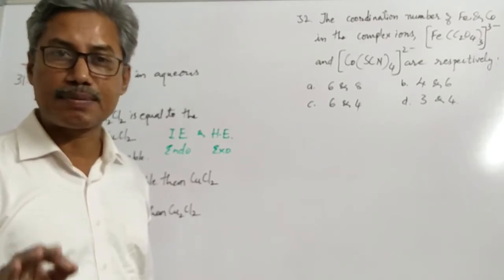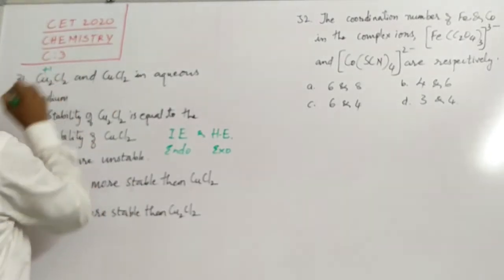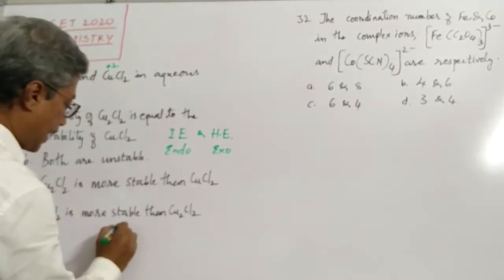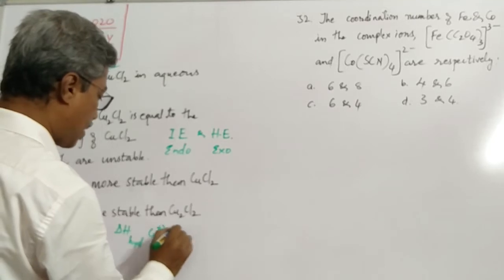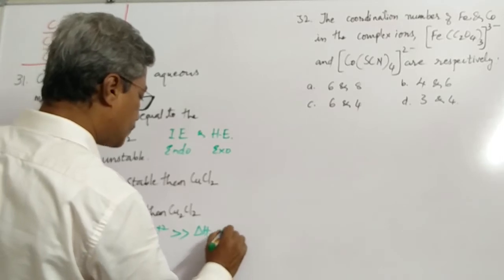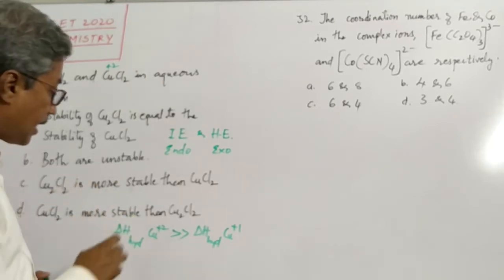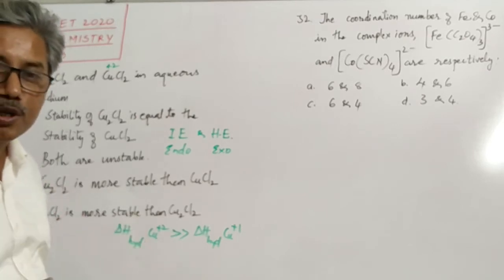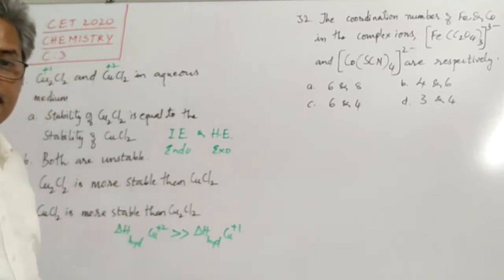Now look at this — one is in the +1 oxidation state and the other is in the +2 oxidation state. The data gives the enthalpy change of hydration of the Cu⁺ ion. What this indicates is that the moment a copper salt is added to water, it will prefer to exist in the +2 state.